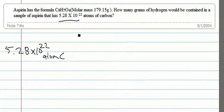We're going to start with the 5.28 times 10 to the 22nd atoms of carbon, change it to moles, using Avogadro's number on the bottom.